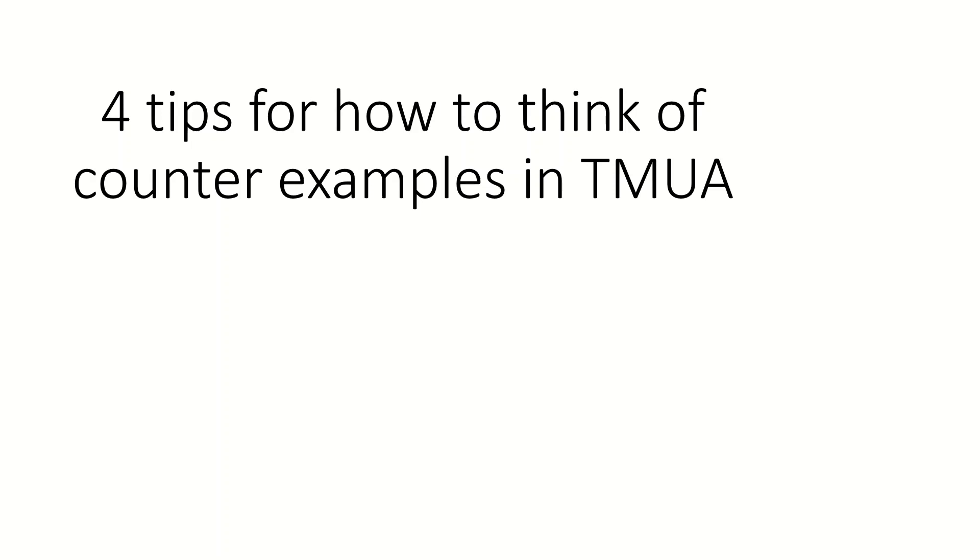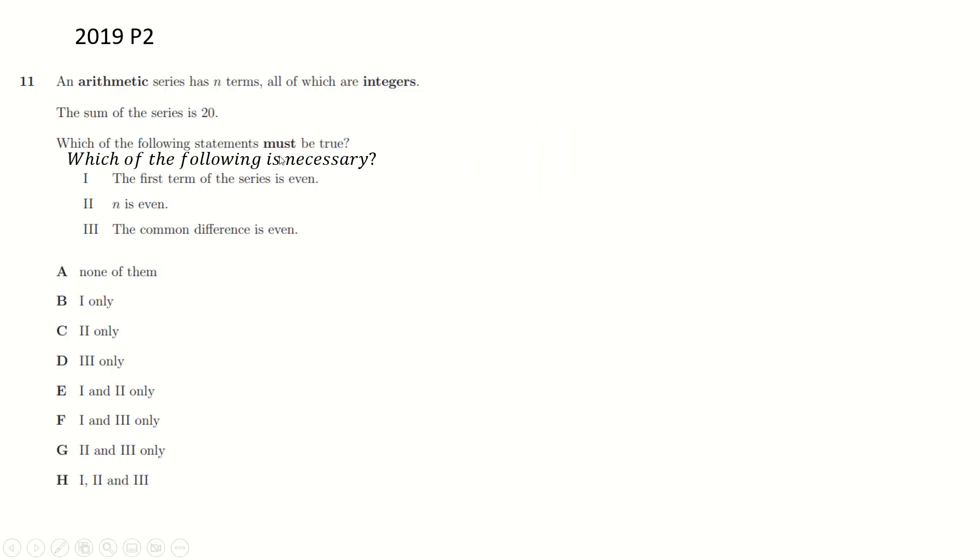Something I've talked about extensively in these videos is finding counterexamples when dealing with questions about necessity and sufficiency. But something I think I really glossed over was how exactly do you find those counterexamples? So for example, here's a question about necessity, and you may as well just replace this with which of the following is necessary.